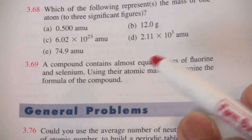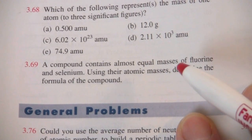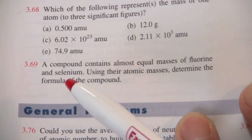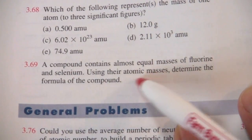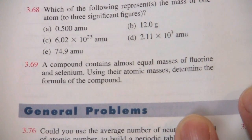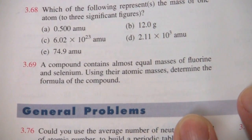So we'll call it equal masses of fluorine and selenium, then we'll look at the periodic table to get their atomic masses and find the formula of that compound from there.